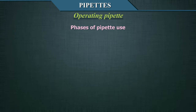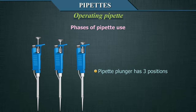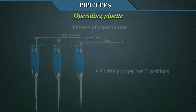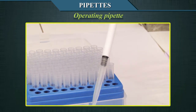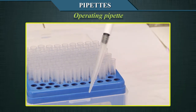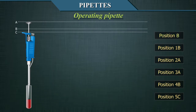Phases of pipette use. The pipette plunger has three positions: position A, which is the blank position; position B, which is the first limit; and position C, which is the second limit. To proceed, place a new tip according to the pipette specification on the pipette tip holder. Avoid contaminating the tip with other substances and ensure it fits well.